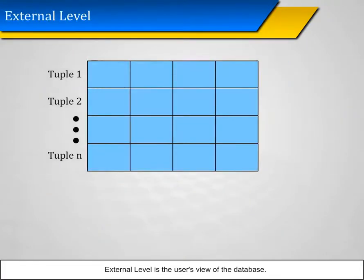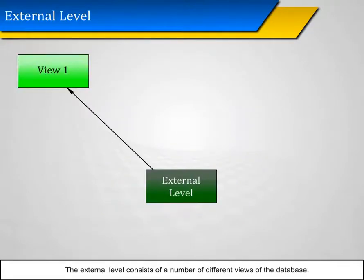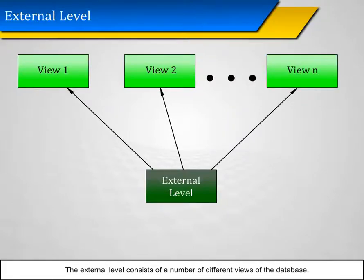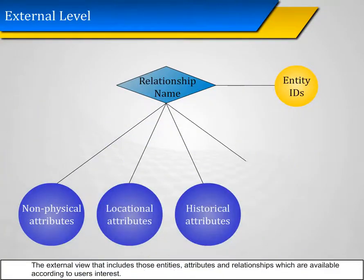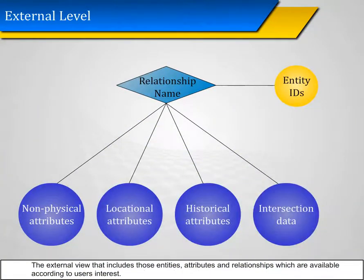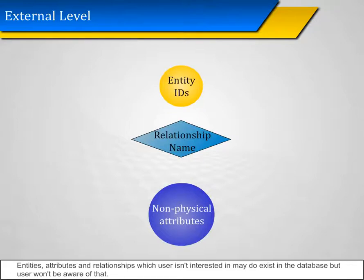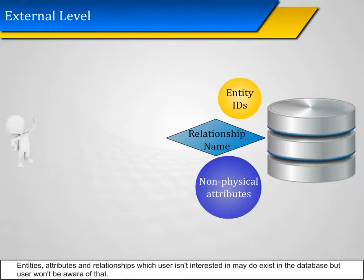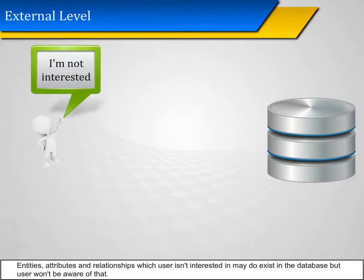External level: The external level is a user's view of a database. It consists of a number of different views of the database. The external view includes those entities, attributes, and relationships which are available according to the user's interest. Entities, attributes, and relationships that the user is not interested in may exist in the database, but the user would not be aware of that.